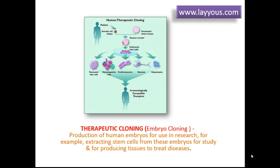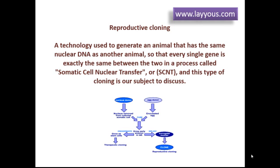Reproductive cloning is a technology used to generate an animal that has the same nuclear DNA as another animal, so that every single gene is exactly the same between the two, in a process called somatic cell nuclear transfer, or SCNT. This type of cloning is our subject to discuss.